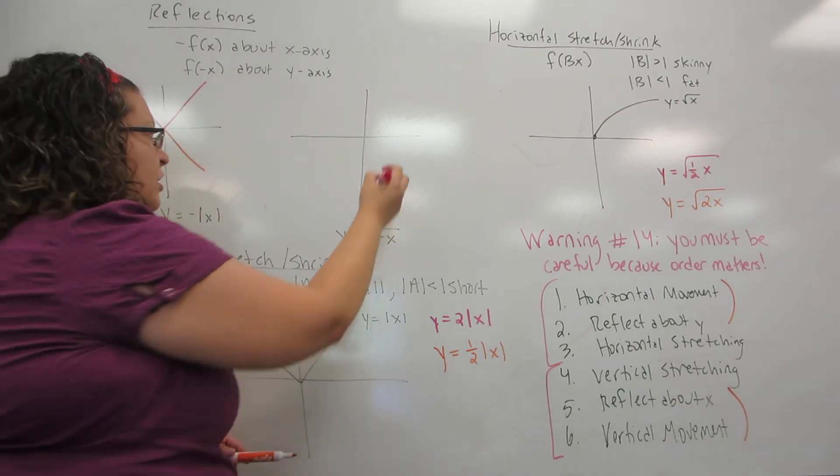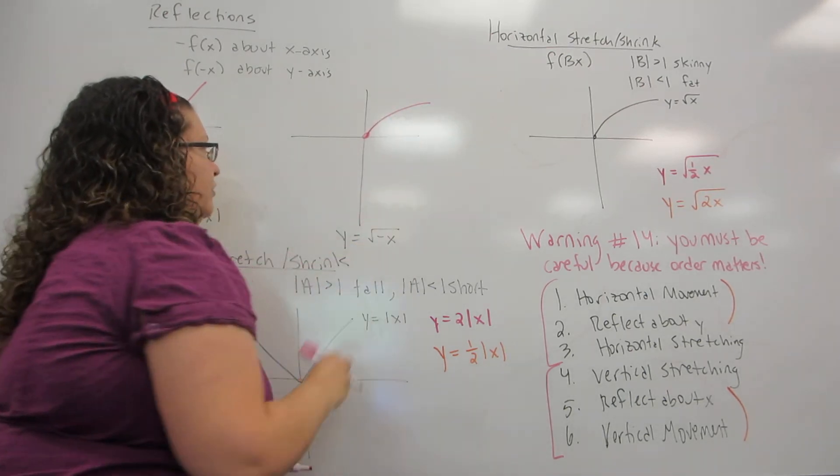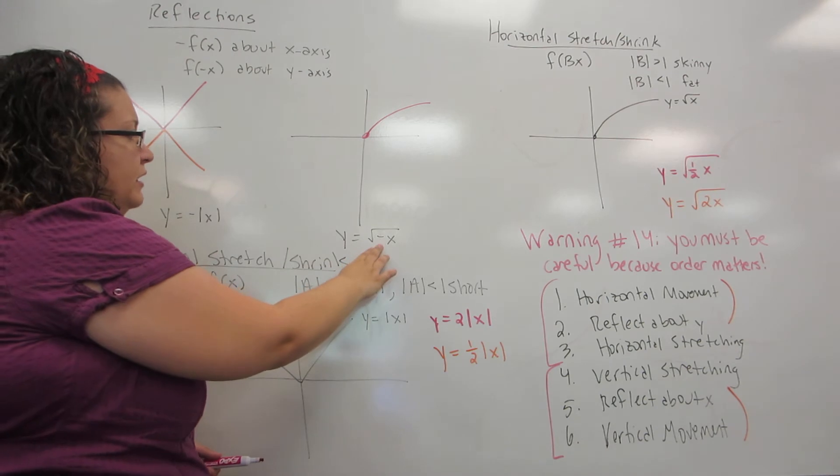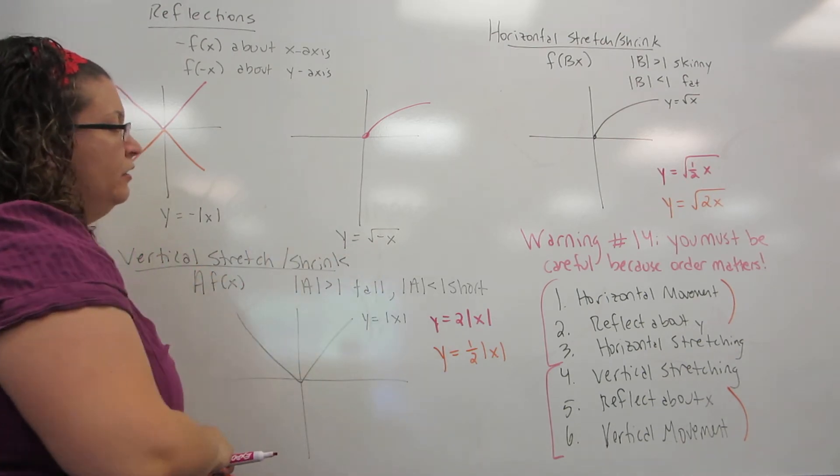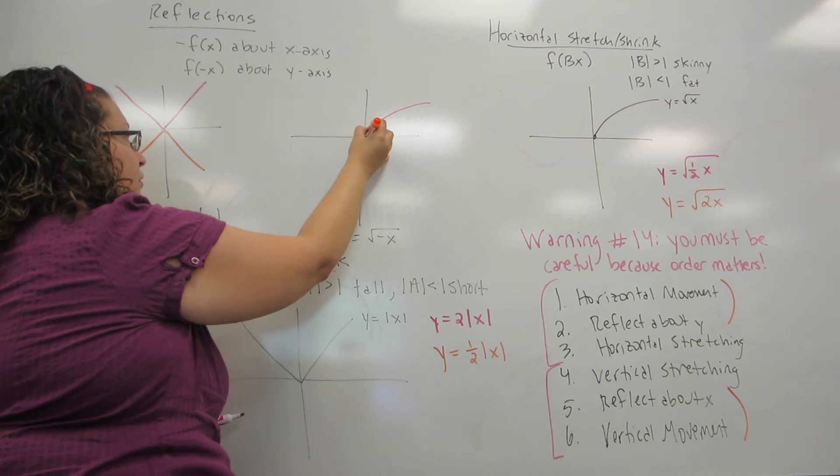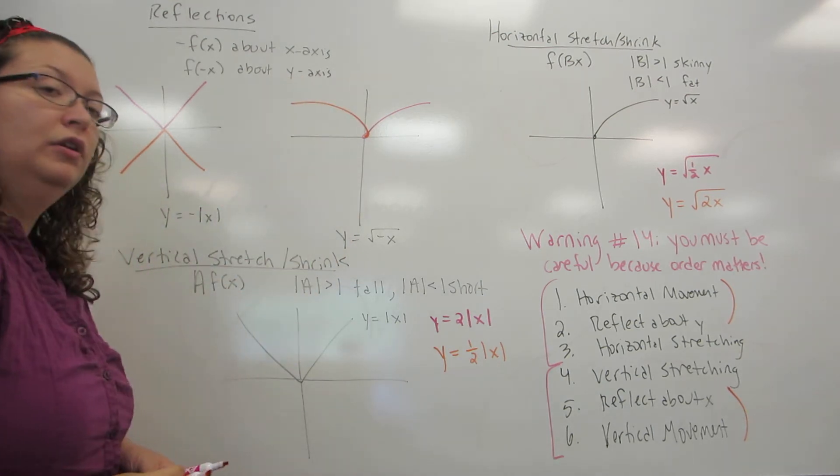In this example, we're going to start with the square root of x. Because the negative sign is inside the square root, we are going to be reflecting about y. So our graph would look like that.